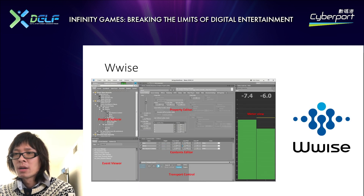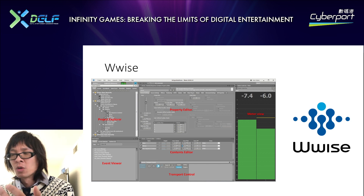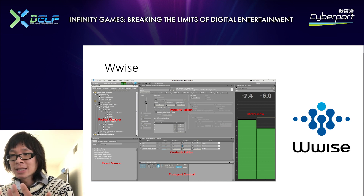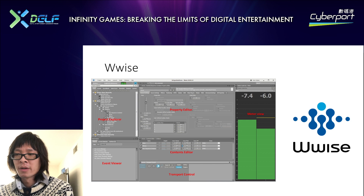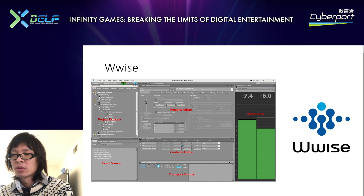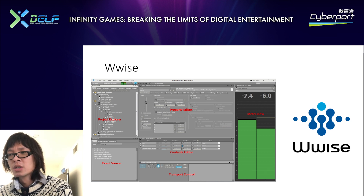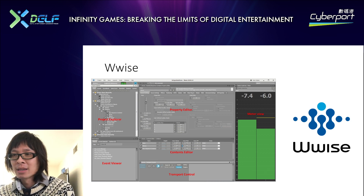Now I want to talk briefly about the software called Wwise. Let's say you finish all the music for the game — what's the next step? In a lot of AAA game studios and indie games, at least in America, we use the Wwise software to implement the music tracks into the games. Let me show you what that looks like.